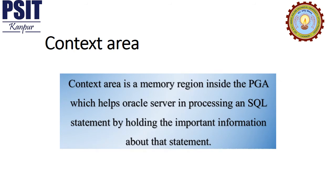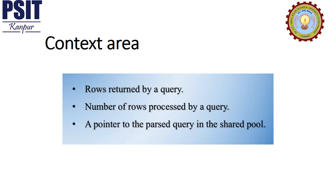Let's take a deep look at the context area. The context area is a memory region inside the Process Global Area, or PGA, which helps the Oracle server in processing an SQL statement by holding important information about that statement. This information includes rows returned by a query, number of rows processed by a query, and a pointer to the parsed query in the shared pool. Using a cursor you can control the context area, as it is a pointer to the same.